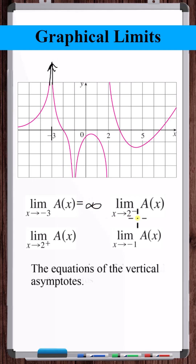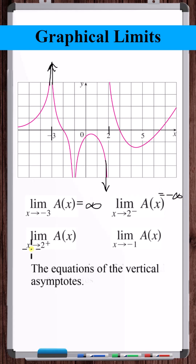The limit as x approaches 2 from the left. Here's 2. Coming from the left, a of x is approaching negative infinity. As x approaches 2 from the right, a of x is approaching positive infinity.